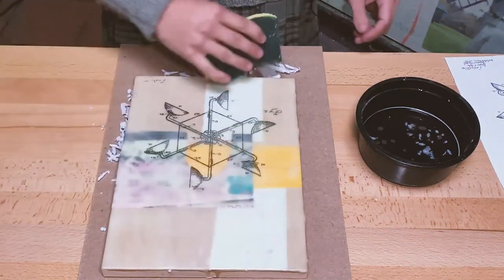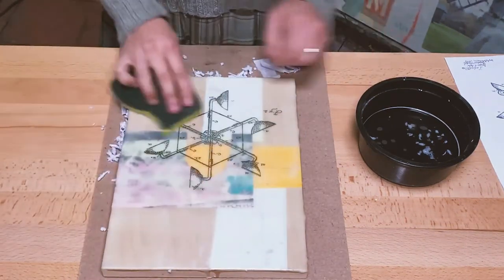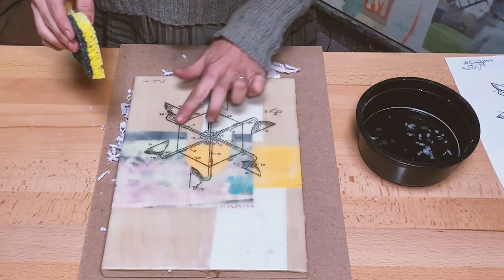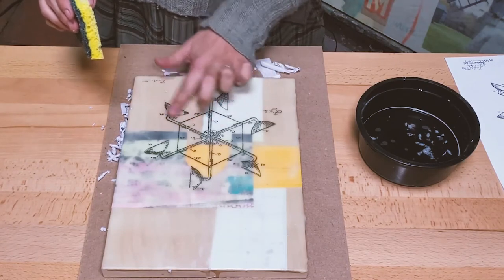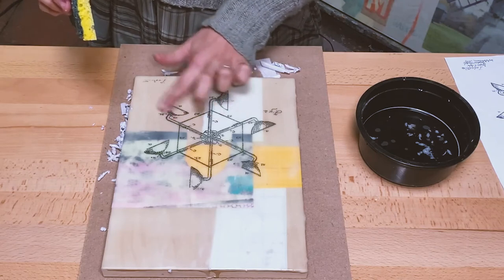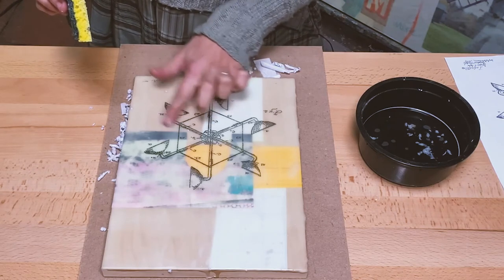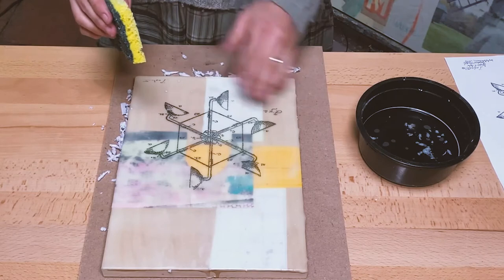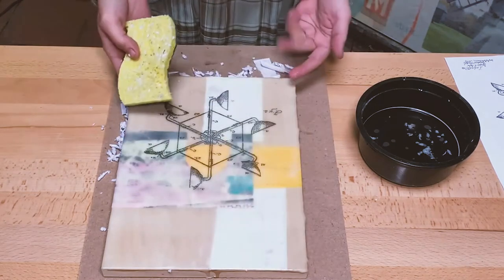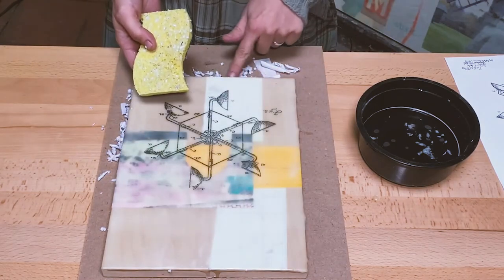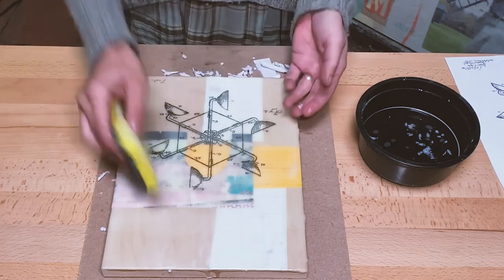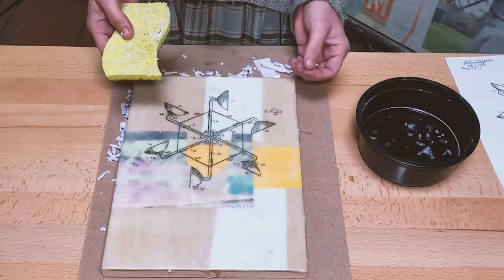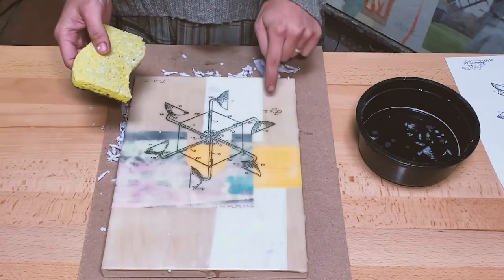So now you can see that most of the paper residue has been taken off. I'm just getting a little bit of the residual paper off. And this process works with the water because the encaustic repels the water, right? It's got the wax coating, so you can put as much water on it as you want and it's not going to hurt the surface.